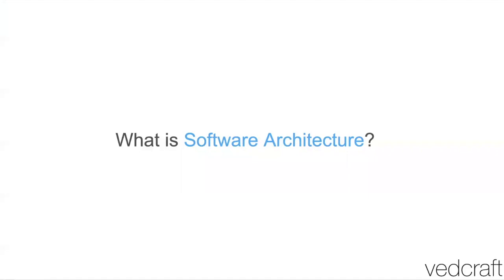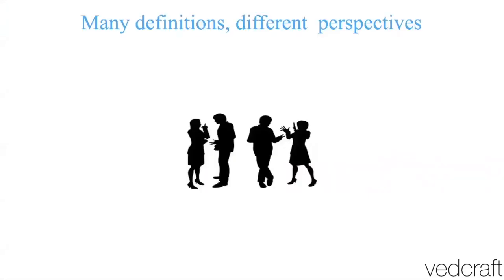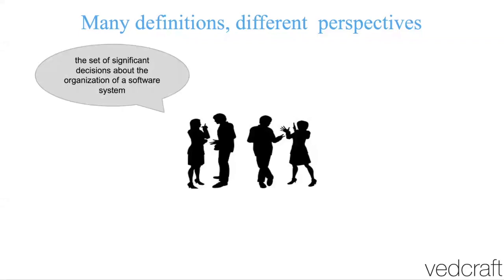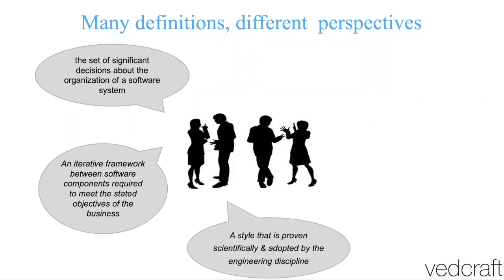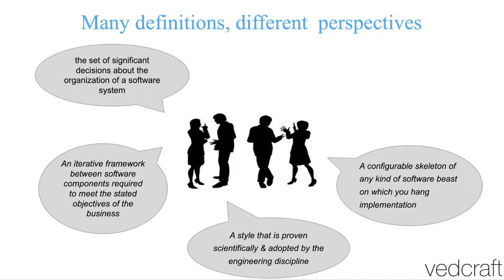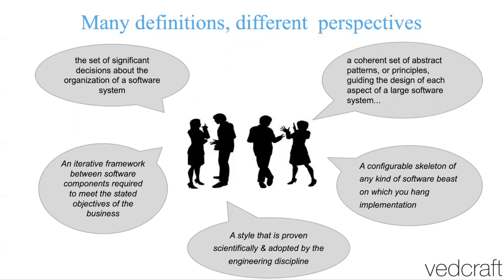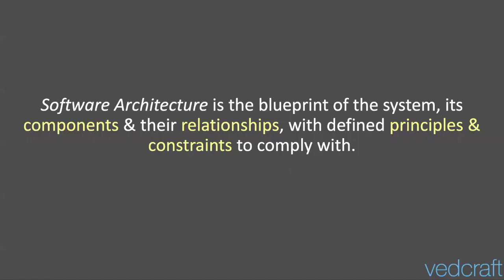What is software architecture? There are definitely different perspectives from different folks. Some consider it as significant decisions which you are making for a software. Some consider it as an iterative process which is going to meet the business objective. Some consider it as a style specifically related to the engineering domain. Some consider it as a skeleton where you are defining how you're going to build software in your organization. And some consider it as a set of principles and guidelines for building large software systems. There is no right or wrong answer — most of these definitions correlate with each other.